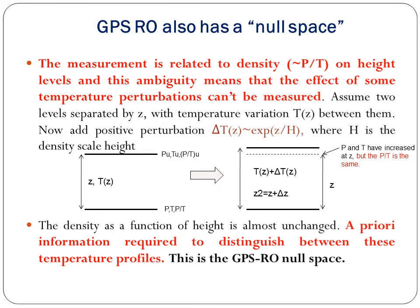Assume two levels separated by Z with temperature T(Z) between them. Adding a positive perturbation delta-T(Z) approximately equal to exp(Z/H), where H is the density scale height, both P and T will increase but P-bar/T remains the same. The density as a function of height is almost unchanged. This prior information required to distinguish between temperature profiles is called the GPSRO null space.